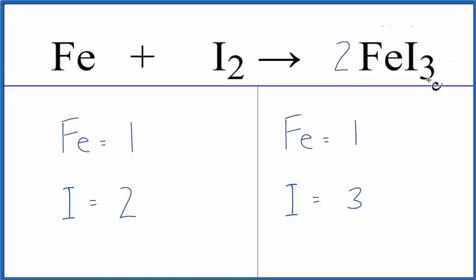This 2 applies to everything here. So we have 3 times 2, that gives us 6 iodines. And then 1 times 2, that gives us 2 iron atoms.